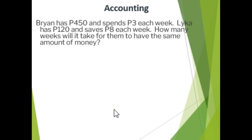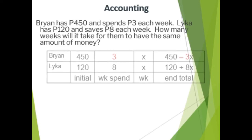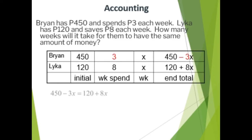Now it's your turn. Ryan has 450 pesos and spends 3 pesos each week. Laika has 120 pesos and saves 8 pesos each week. How many weeks will it take for them to have the same amount of money? You can pause the video to answer. Let's check your answer — it will take 30 weeks for them to have the same amount of money.